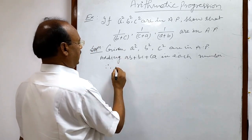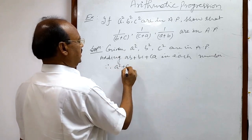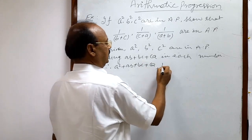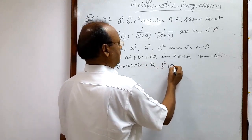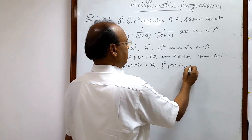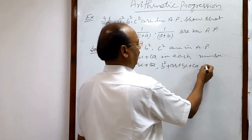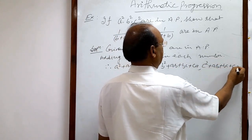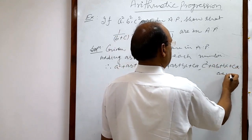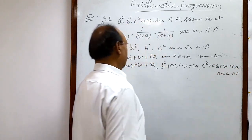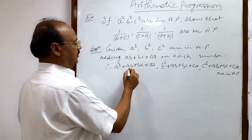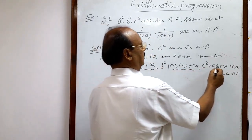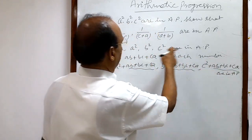Therefore, we will get that a²+ab+bc+ca, b²+ab+bc+ca, and c²+ab+bc+ca are also in AP. Clearly, we have added ab+bc+ca to each of these numbers.